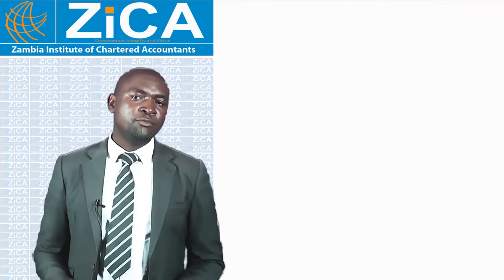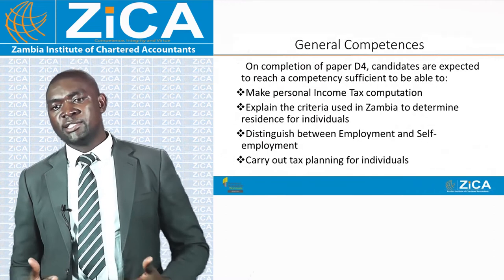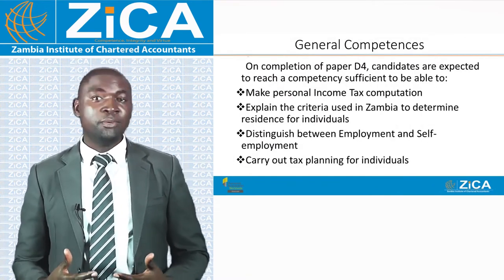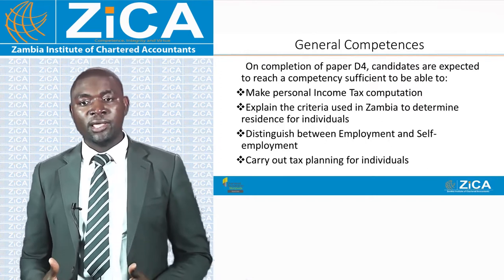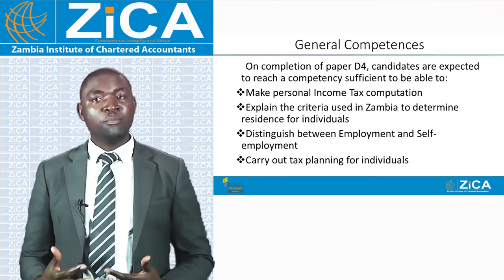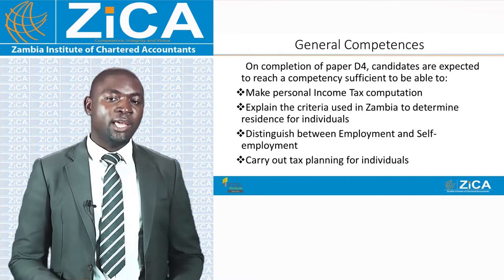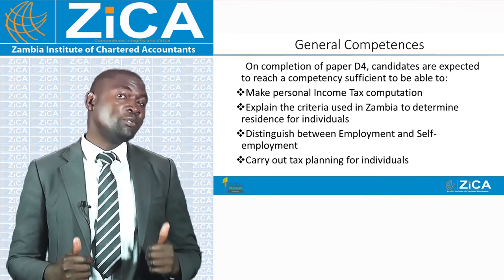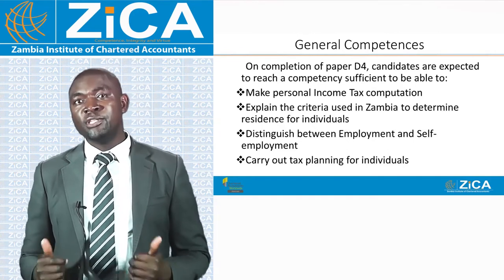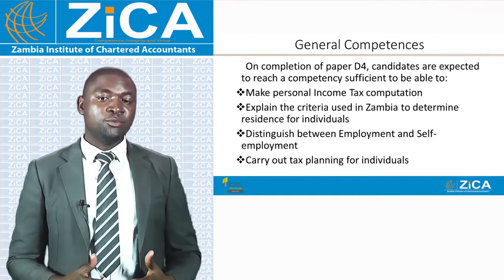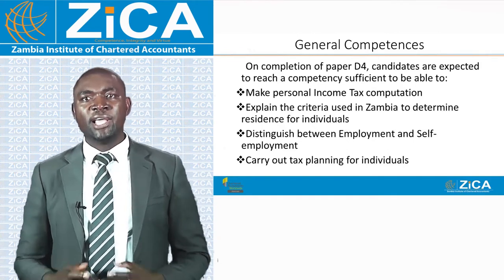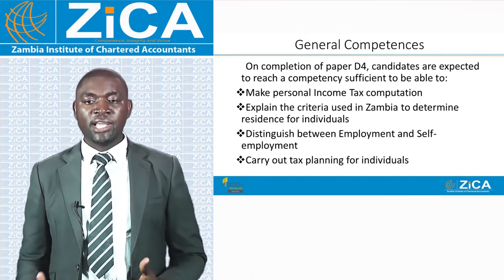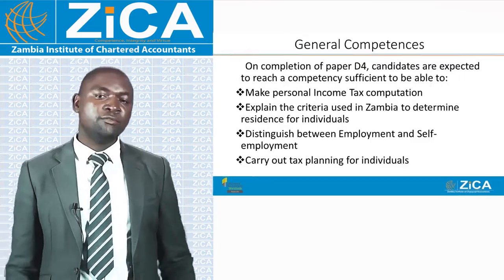On completion of this paper, candidates are expected to reach a competence sufficient to: make personal income tax computations; explain the criteria used in Zambia to determine residence for individuals; distinguish between employment and self-employment; and carry out tax planning for individuals.